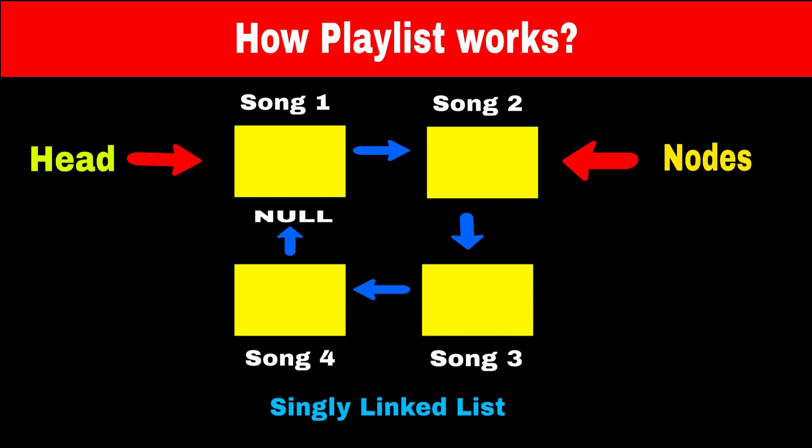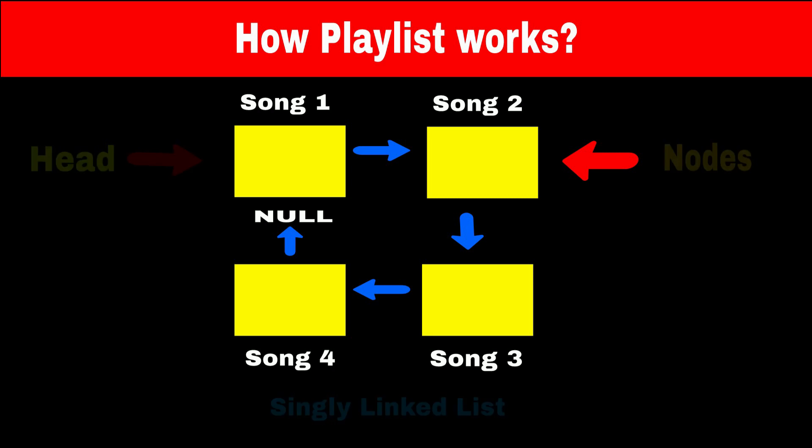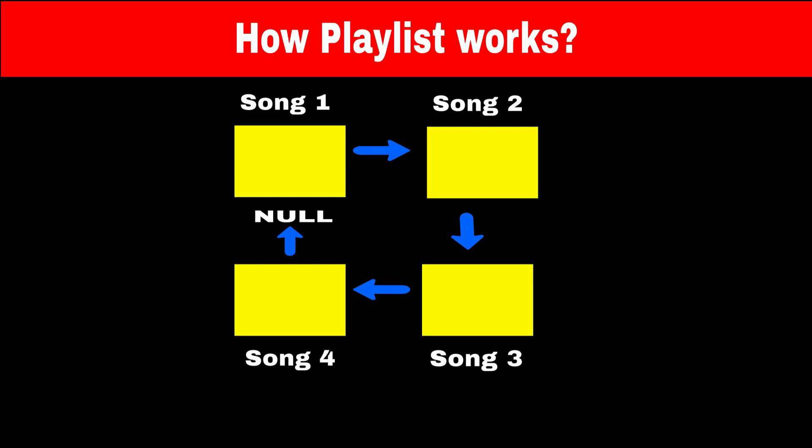Now imagine you are on song 4 and you want to go back to song 3. In a singly linked list, we have to traverse the entire list again from the head node to the third song, which is time consuming. So in each node, along with storing the address of the next node, we will also store the address of the previous node.